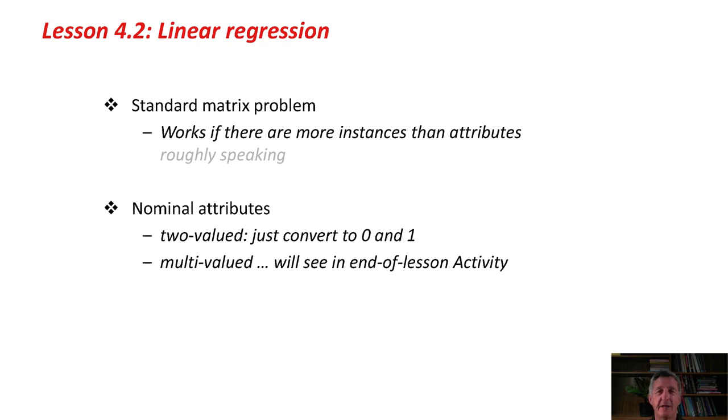If we did have nominal values, if we just had a binary value, 0 and 1, we could just convert it to 0 and 1 and use those numbers. If we had a multi-valued nominal attribute, you'll have a look at that in the activity at the end of this lesson.